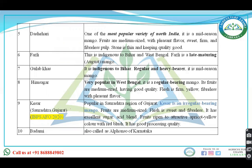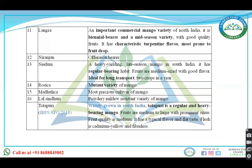Kesar is from Saurashtra, Gujarat, and is an irregular bearing mango — this was asked in IVPS April 2020. Badami is also called the Alphonso of Karnataka. Langra is an important commercial mango variety of North India, a biennial bearer and mid-season variety.